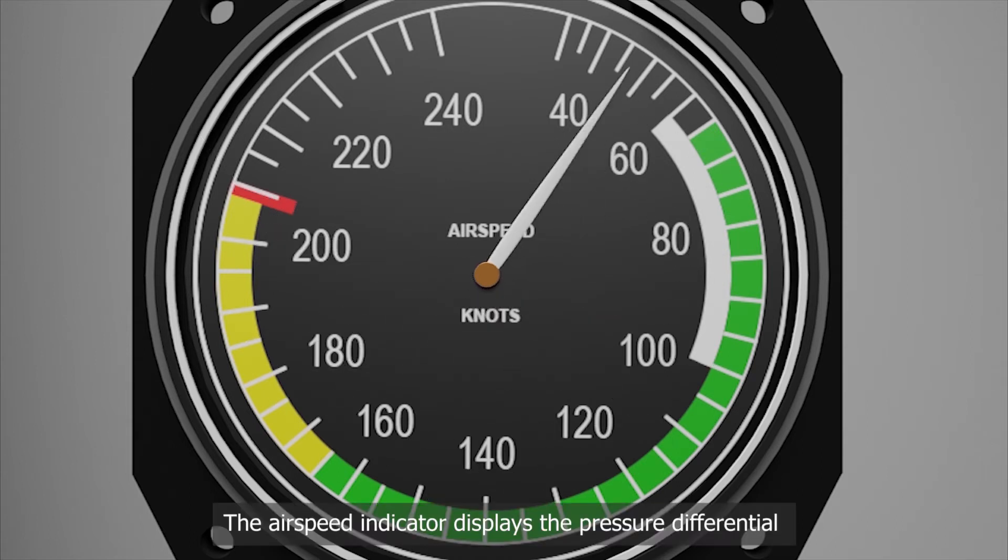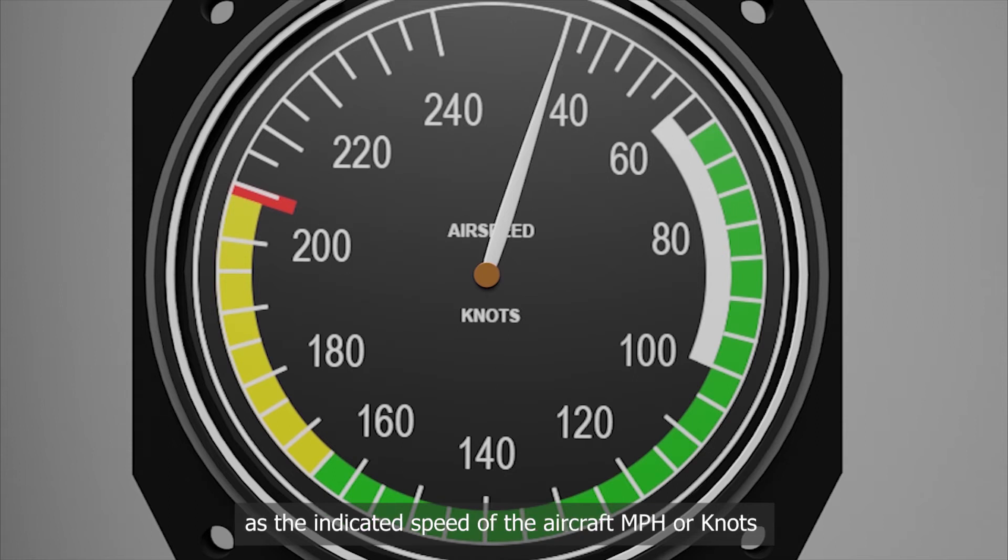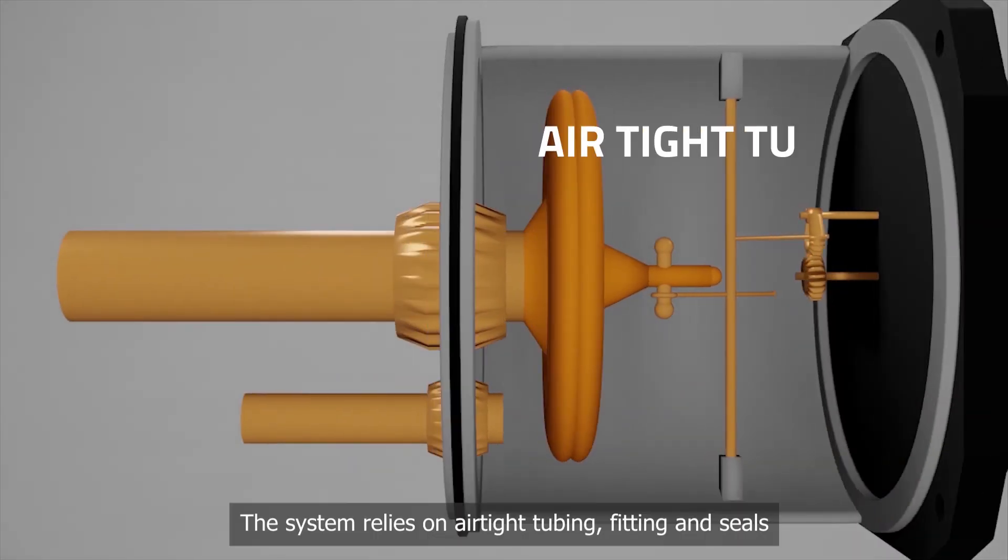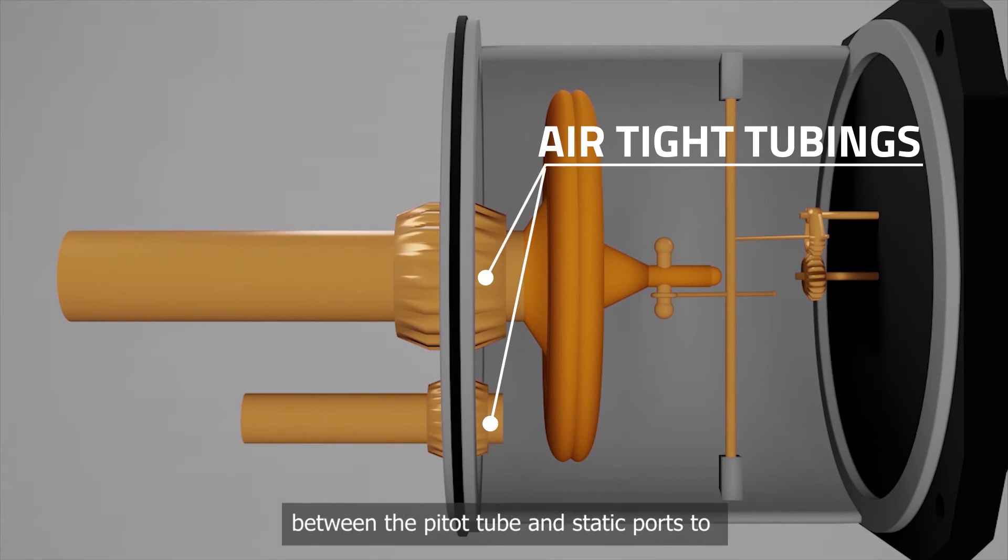The airspeed indicator displays the pressure differential as the indicated speed of the aircraft in miles per hour or nautical miles per hour, not adjusted for temperature and general wear of indicator components. The system relies on airtight tubing, fitting and seals between the pitot tube and static ports to the instrument to work correctly. Any part of the system could have a leak or blockage that could affect accurate readings.